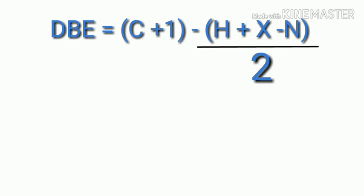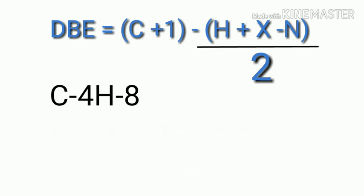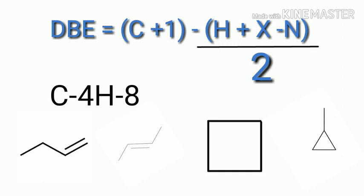The double bond equivalent formula is: DBE = (2C + 2 - H + X - N) / 2, where C is the number of carbon atoms, H is hydrogen atoms, X is halogens, and N is nitrogen atoms. For C4H8: (2×4 + 2 - 8) / 2 = (8 + 2 - 8) / 2 = (10 - 8) / 2 = 1.